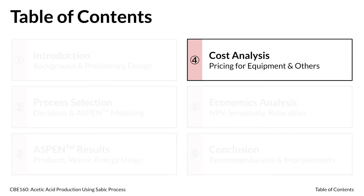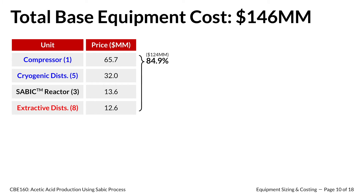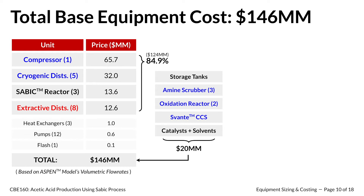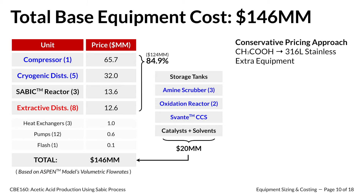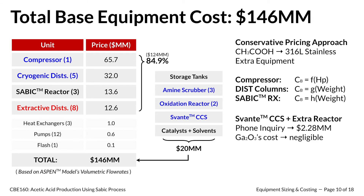I would like to present the sizing and pricing of all relevant equipment in our proposed process. Three operating units — our compressor, distillation columns, and reactors — make up around 85% of our base equipment costs. Including smaller operating units, our total base equipment cost comes out to approximately $146 million. We took a conservative pricing approach using 316L stainless steel to account for the presence of acetic acid and included extra reactors and distillation columns for emergencies and unexpected maintenance. Equipment costs were calculated using equations from the Turton textbook, and for units not in the textbook, we made phone inquiries to relevant companies. This is a study estimate and thus is prone to around plus or minus 20 to 30% error.